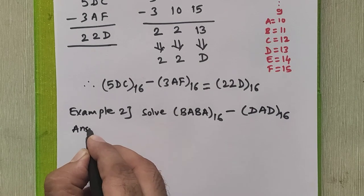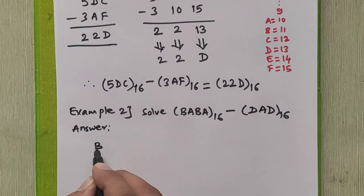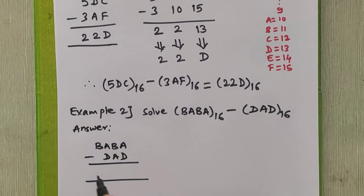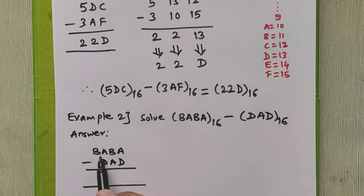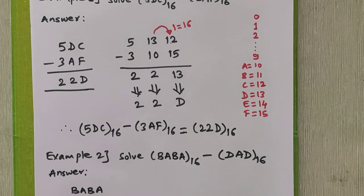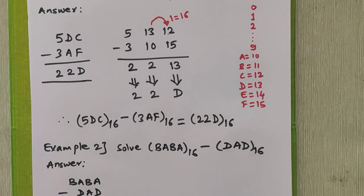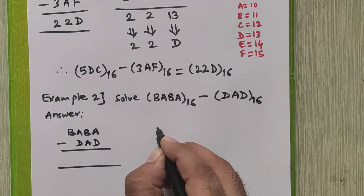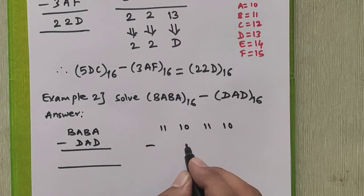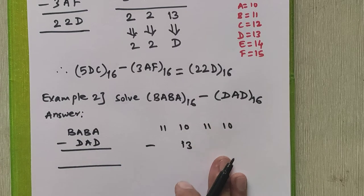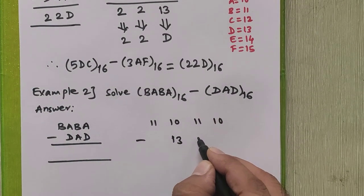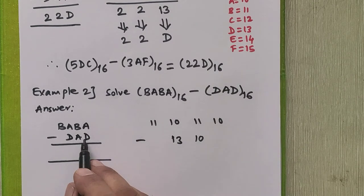We write the numbers as BABA minus DAD and set up space for the final answer. We replace each letter with its actual value: B is 11, A is 10, D is 13. So the top number becomes 11, 10, 11, 10 and the bottom number becomes 13, 10, 13.